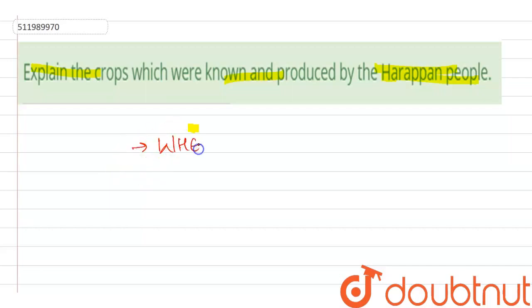So the first crop that they produced is wheat. They also used to produce barley. Barley means jaw. And they also used to produce different lentils, that is dalai, and chickpeas.